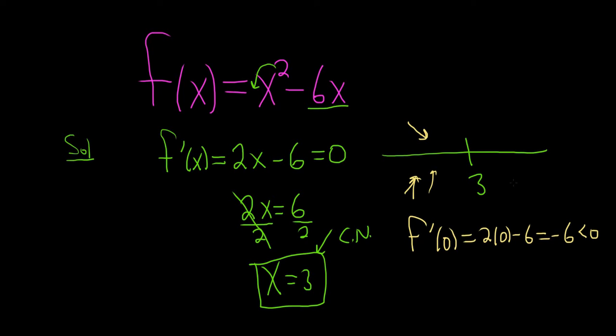So now we pick another number, any number we like, bigger than 3. How about 4? So f prime of 4, that's 2 times 4 minus 6, that's 8 minus 6, which is 2. And that's positive. So that means it's increasing. Remember, if the first derivative is negative, your function is decreasing. If it's positive, your function is increasing.